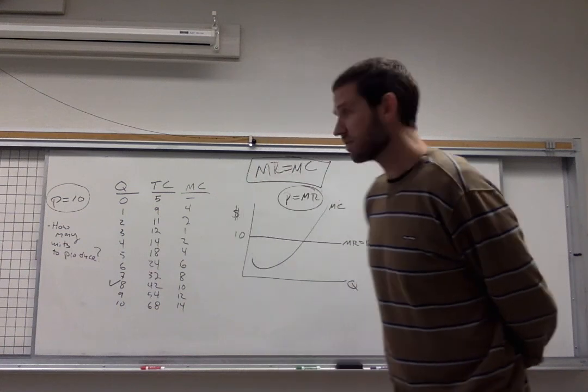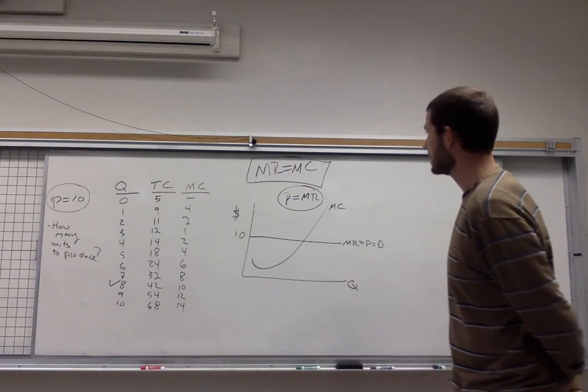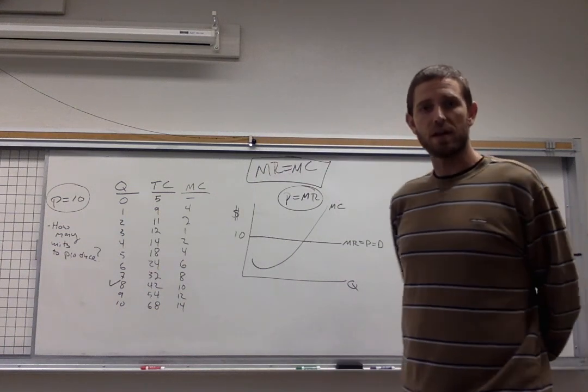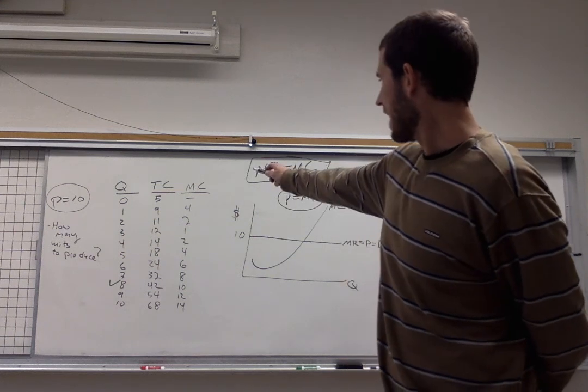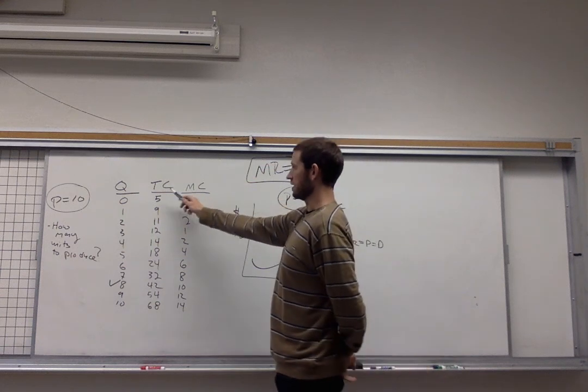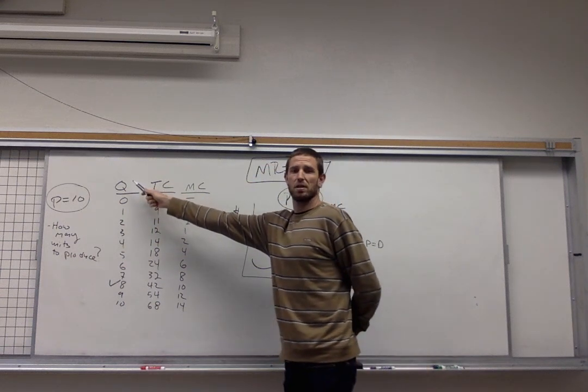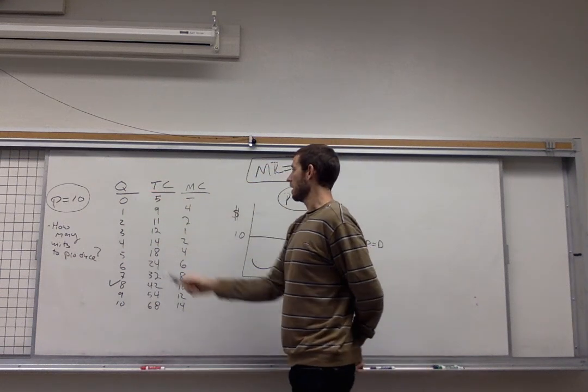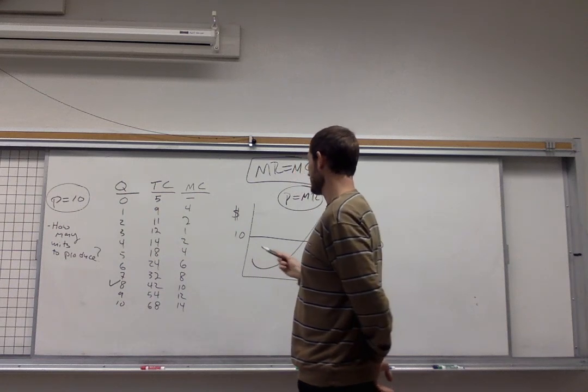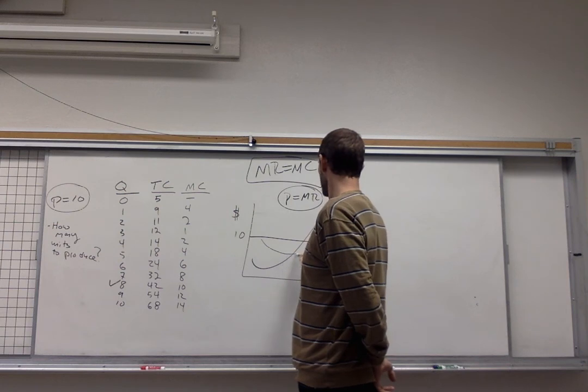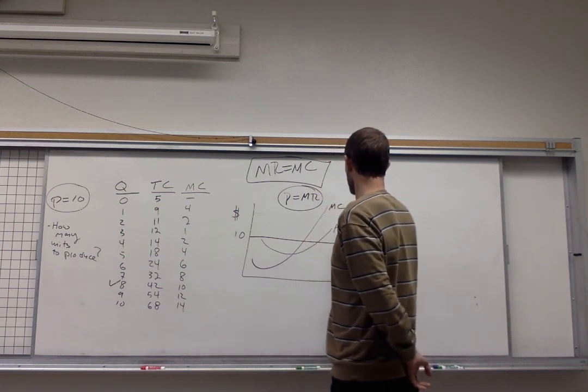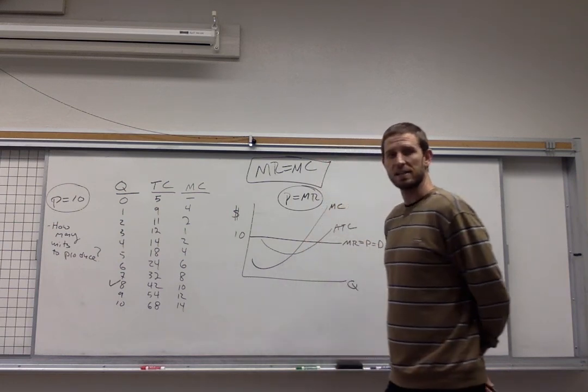And then the final curve that you need here for saying something about profit is the average total cost curve. And I don't have that from the table but I could get it really easily just by taking total cost divided by quantity. The pattern that you're going to see is the average total cost is typically falling and then rising again, U shaped looking like that ATC.